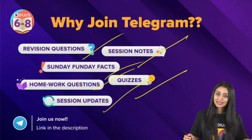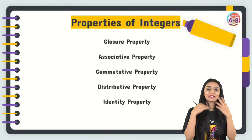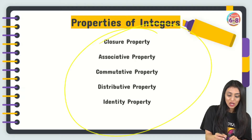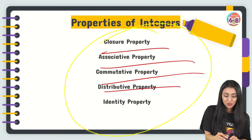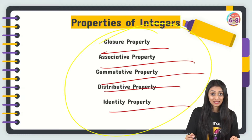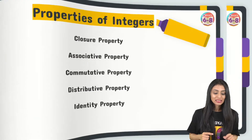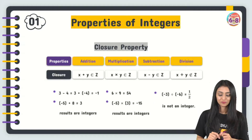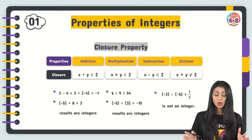Now let's get started with the properties of integers. The properties we'll cover are: closure property, associative property, commutative property, distributive property, and identity property. Let's start with the closure property first.